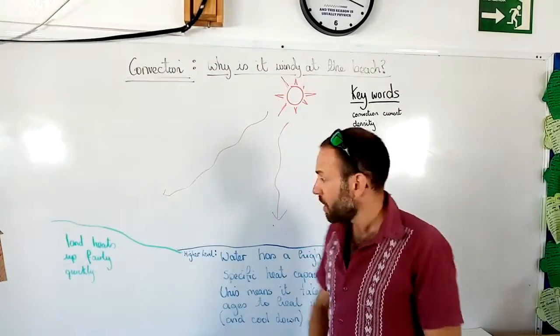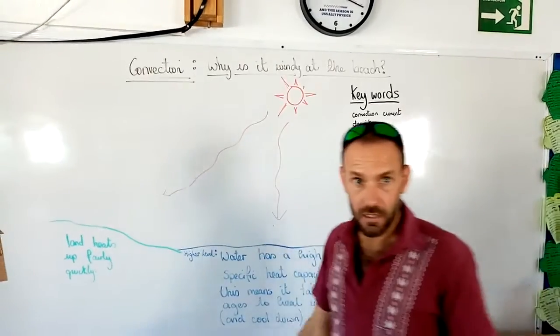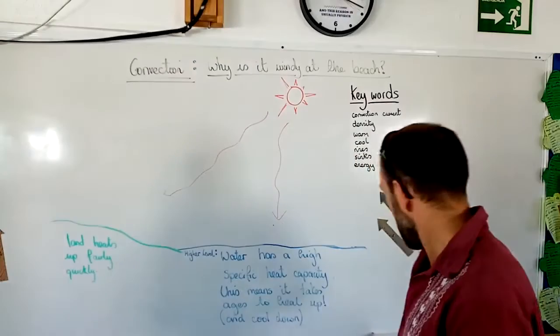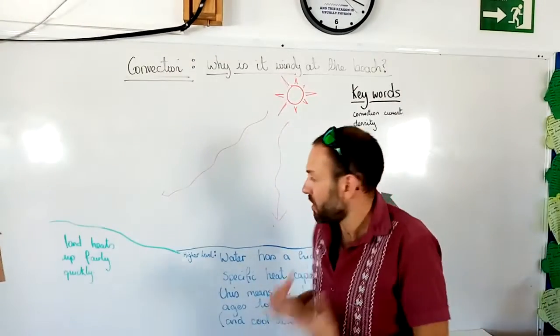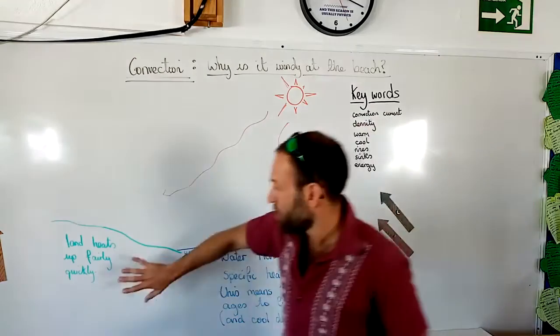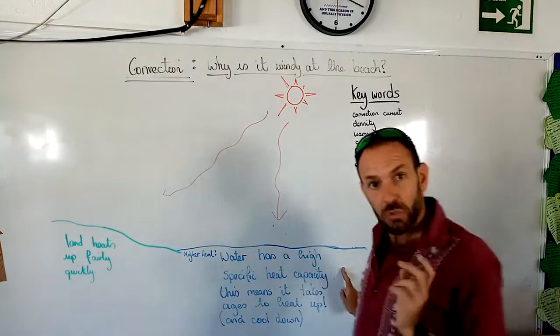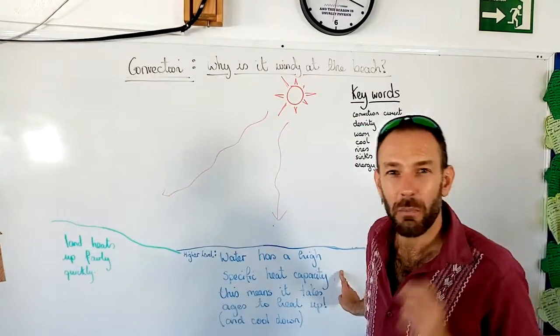The heat from the sun is going to warm up the sea and it's going to warm up the land. Now, the sea, water and land heat up at different rates. The land is going to heat up a lot quicker than the water. That's because water has a high specific heat capacity.